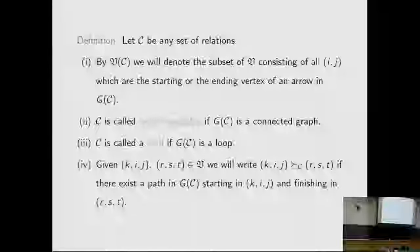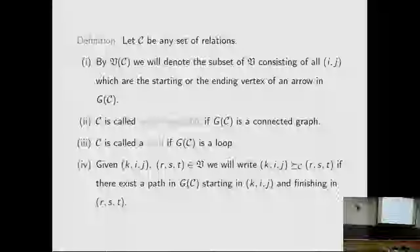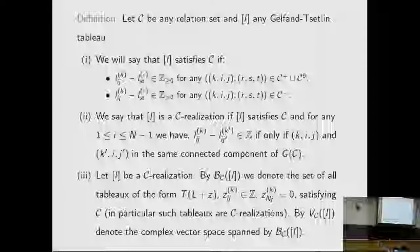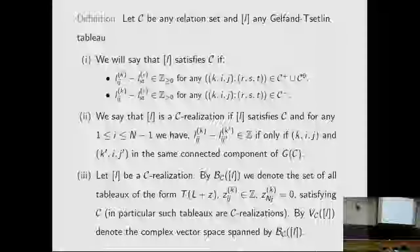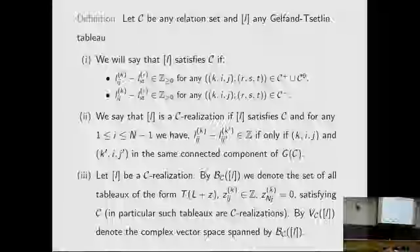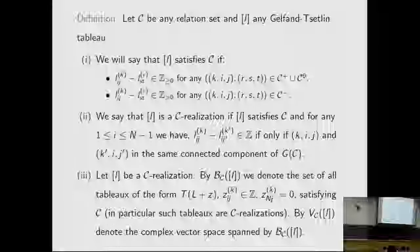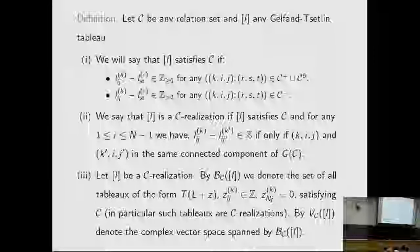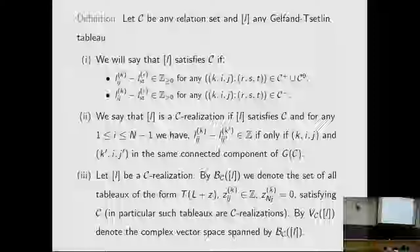For any two vertices, we write K_{ij} greater or equal to R_{st} if there is a path from K_{ij} to R_{st}. We can then define when a tableau satisfies C: we say L satisfies C if for any element in C_plus union C_0, the difference L_{ijk} minus L_{st} is a non-negative integer, and for elements in C_minus the difference is a positive integer. We say L is a C-realization if L satisfies C and for any i, the difference is an integer if and only if the two entries are in the same component.